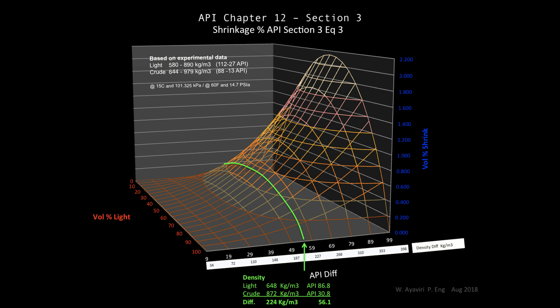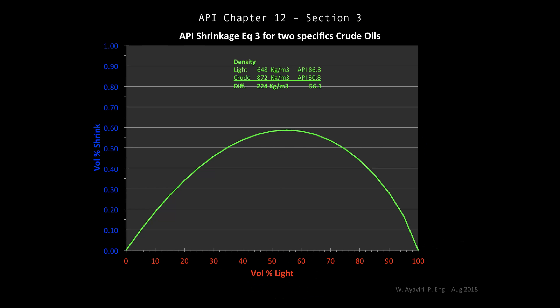The green curve shows a specific example for a 56 API density difference. If we plot this example into two axes — volume and shrinkage — we will have this curve. If we use 5% of diluent, we will have almost 0.098% of shrinkage. For example, for 10,000 cubic meters of total blend, there will be 9.8 cubic meters of shrinkage. And for a hypothetical example with 50% of diluent, we will have the maximum shrinkage of 0.58%.